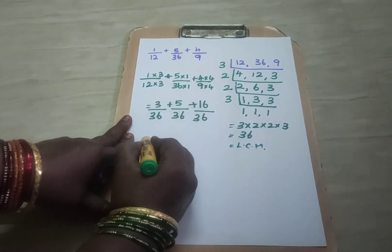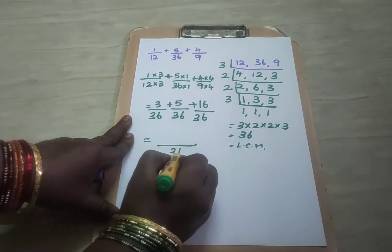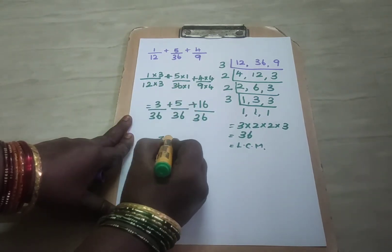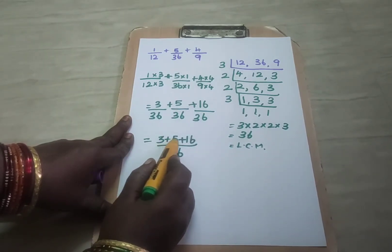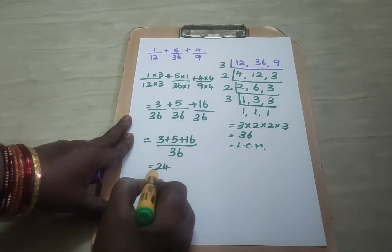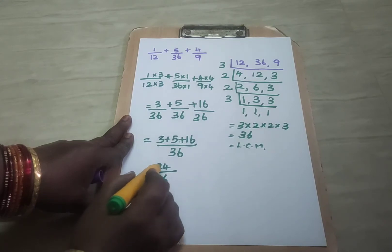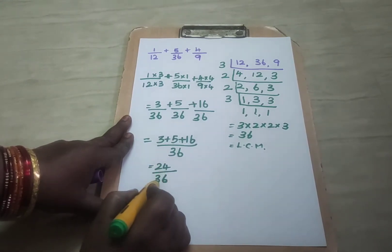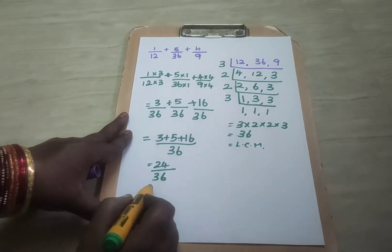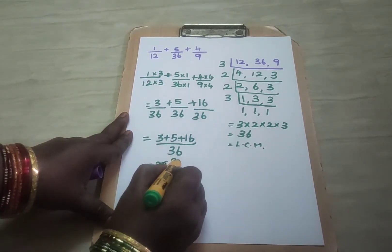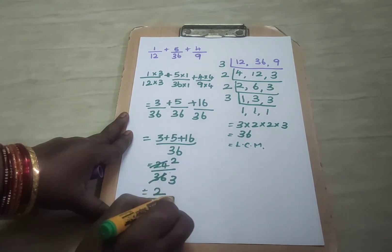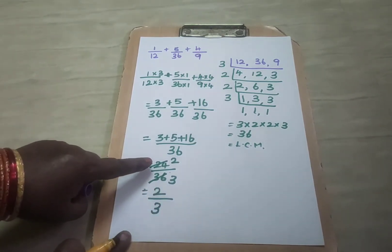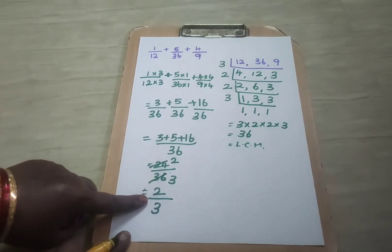Here the denominators are same. So write the denominator as it is and add the numerators: 3 plus 5 plus 16. First 3 plus 5 is 8, then 8 plus 16 is 24. So the answer is 24 by 36. You can leave the answer as it is or you can simplify. Using 12 as the common factor: 2 twelves are 24 and 3 twelves are 36. So the final simplified answer is 2 by 3. After reducing the fraction 24 by 36, you get 2 by 3.